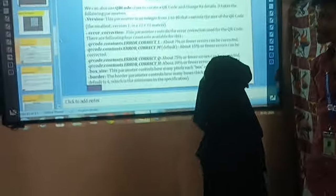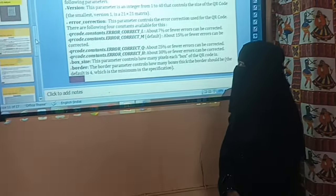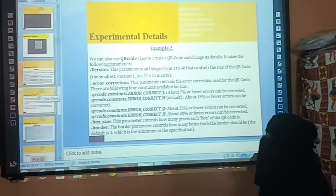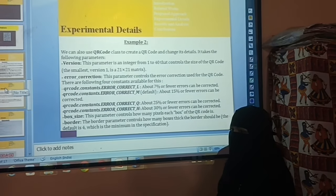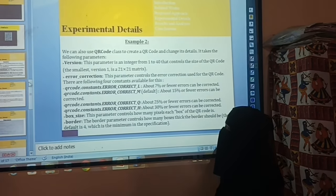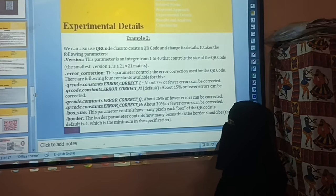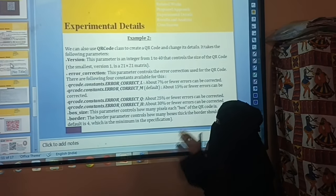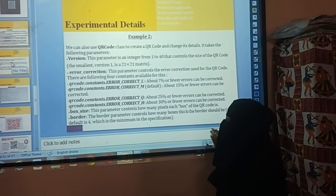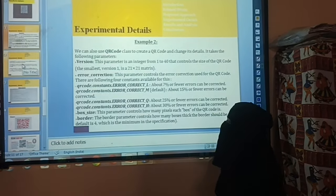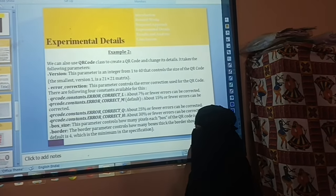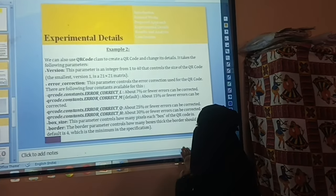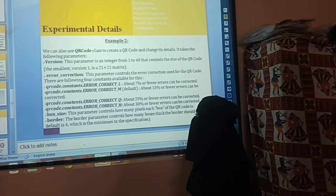Now for experimental details example 2. We can see QR code classes to create QR codes and change its details. Version: the smallest is 1, ranging from 1 to 40 in integers. Error correction controls the error correction in QR codes with 4 constant variables. Box size controls how many pixel cells for the QR code. Border default is 4, which is the minimum specification controlling border thickness.